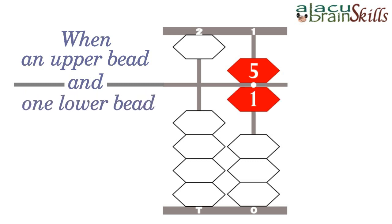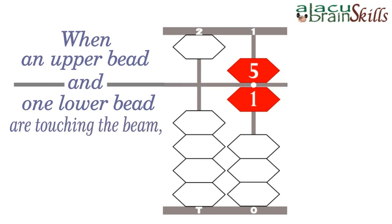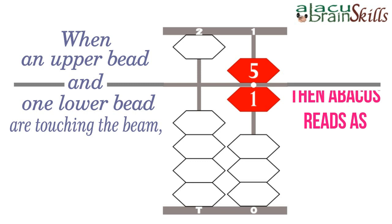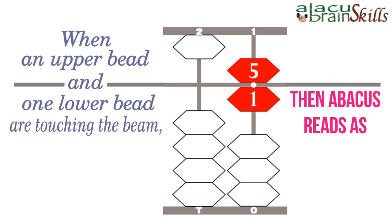When an upper bead and one lower bead are touching the beam, then the Abacus reads as 6.